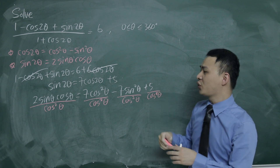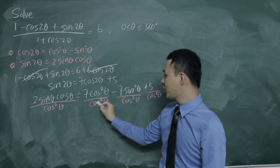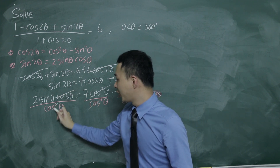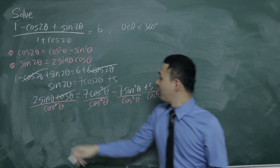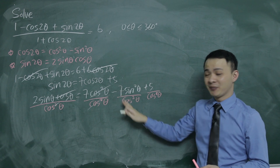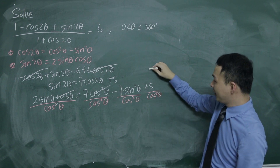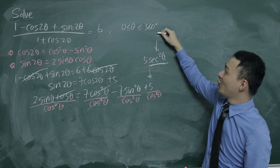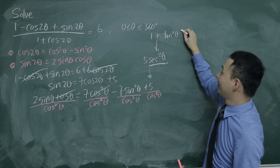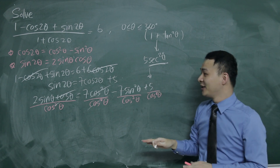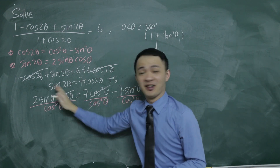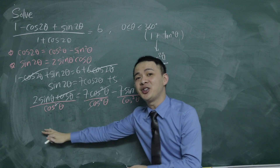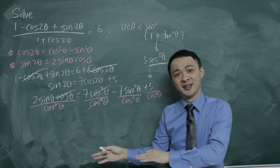Why did I choose to divide by cos²θ? Because cos² over cos² simplifies, leaving just minus 7. The sin cos term over cos gives us tangent. Sin² over cos² gives us tan²θ. And 5 over cos² gives 5 sec²θ, and sec²θ equals 1 plus tan²θ. So if I divide by cos², my whole equation becomes in terms of tan², tangent, and numbers — then I can factorize.